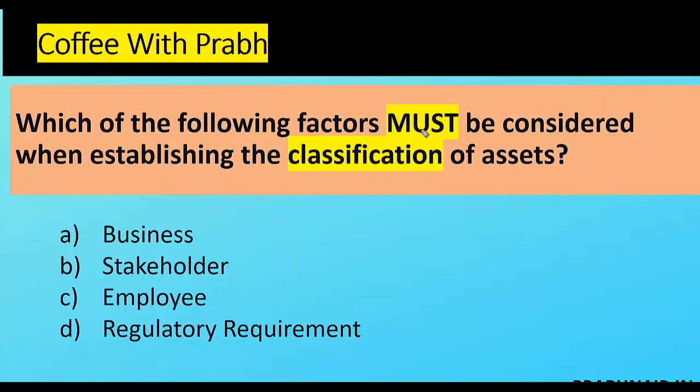Next coffee shot: which of the following factors must be considered when establishing a classification of assets? 'Must' means mandatory — something that cannot be skipped. Business is important, stakeholders also, employees also, regulatory requirements also. But we need to select the option that supersedes everything — the one that is rigid and cannot be ignored.